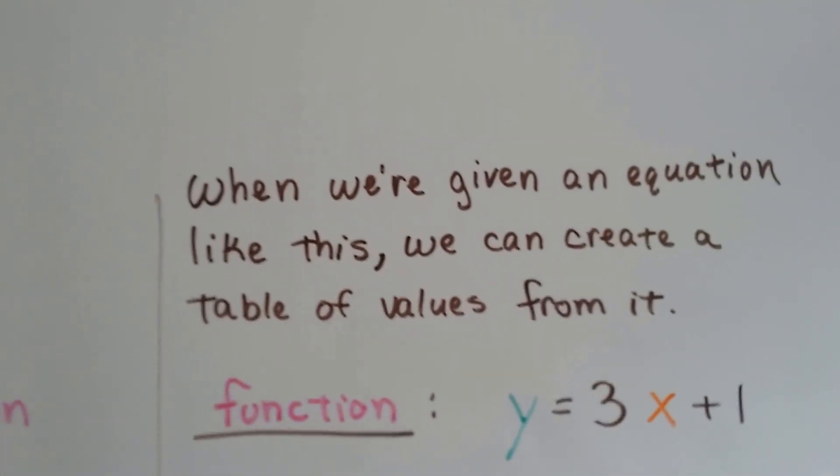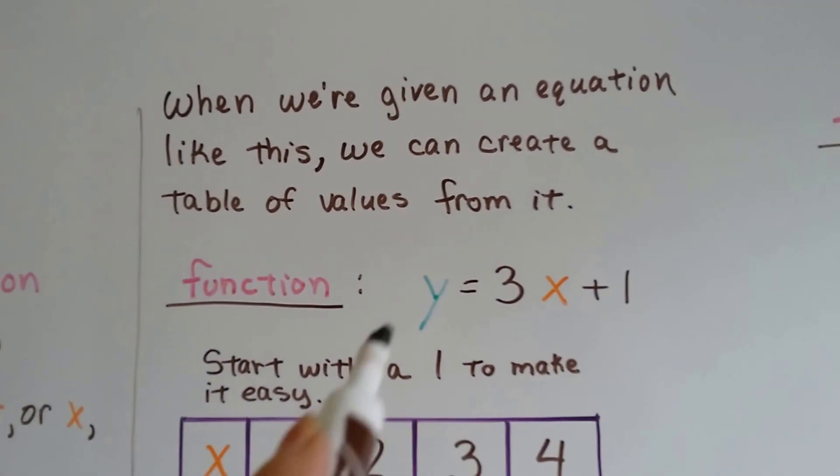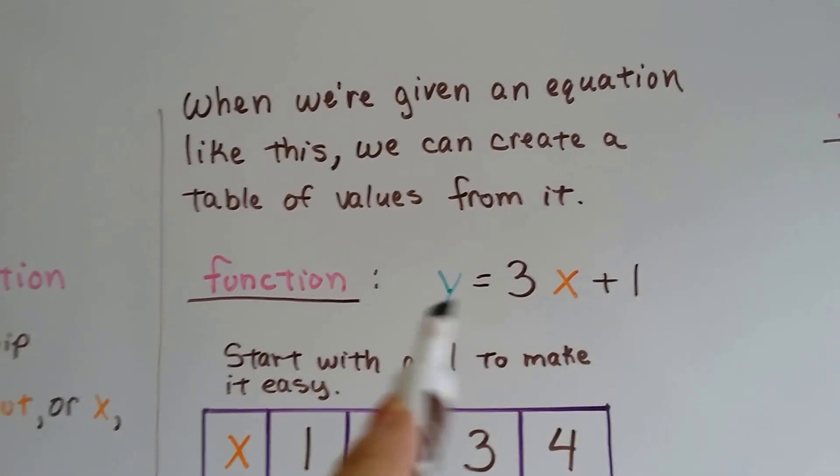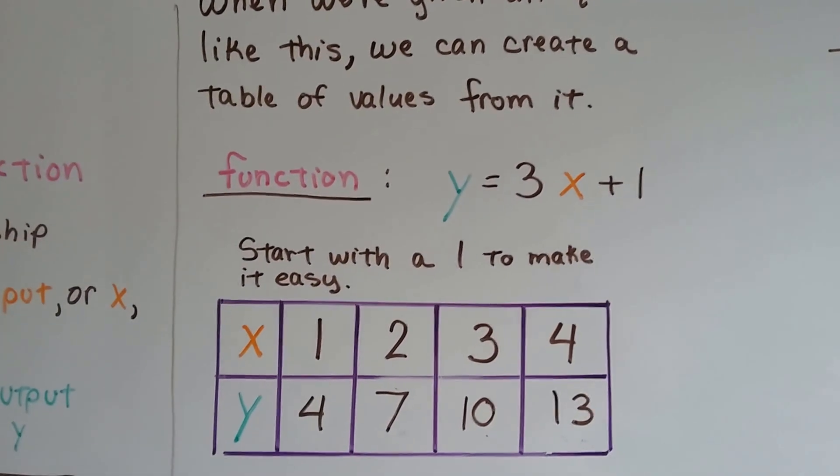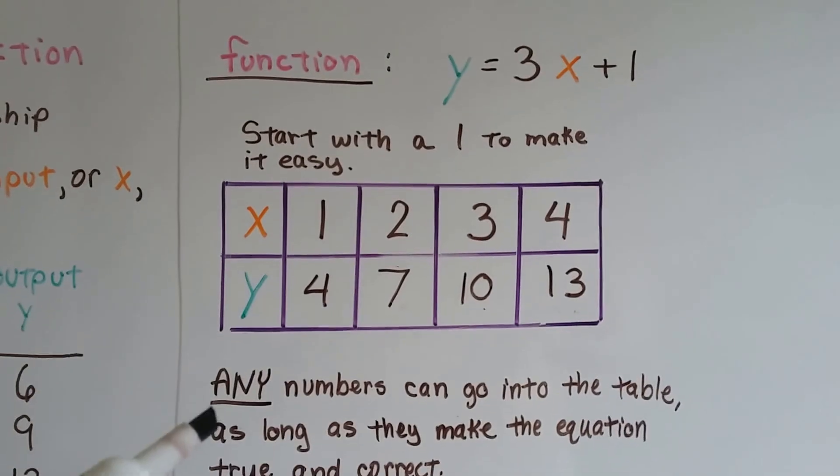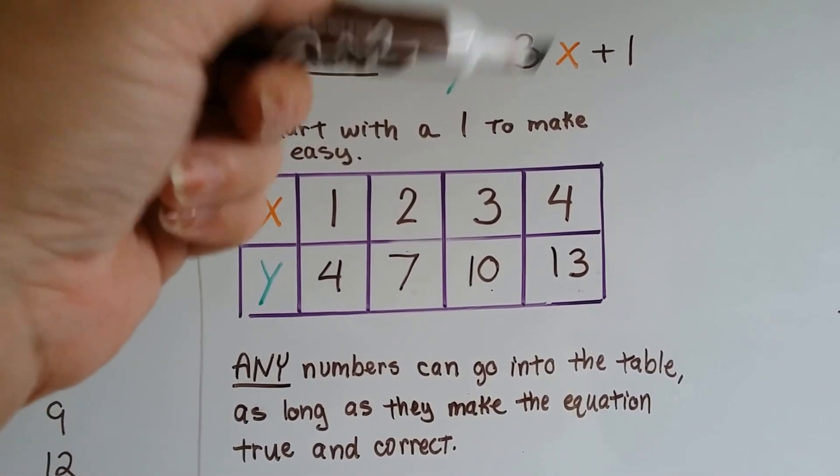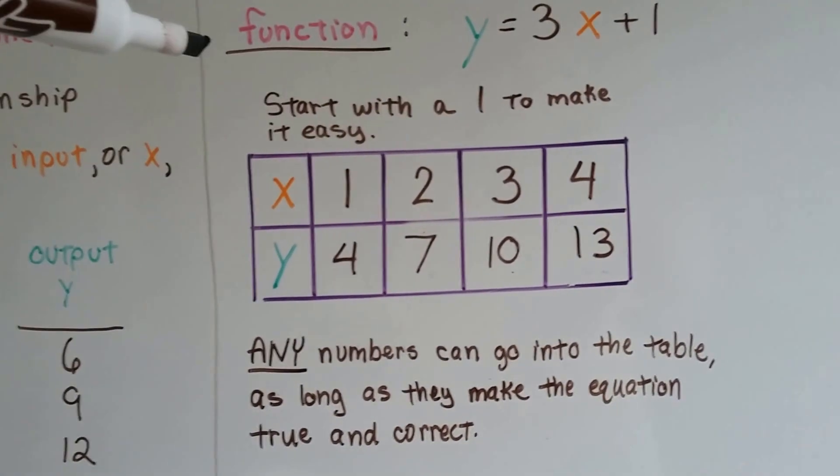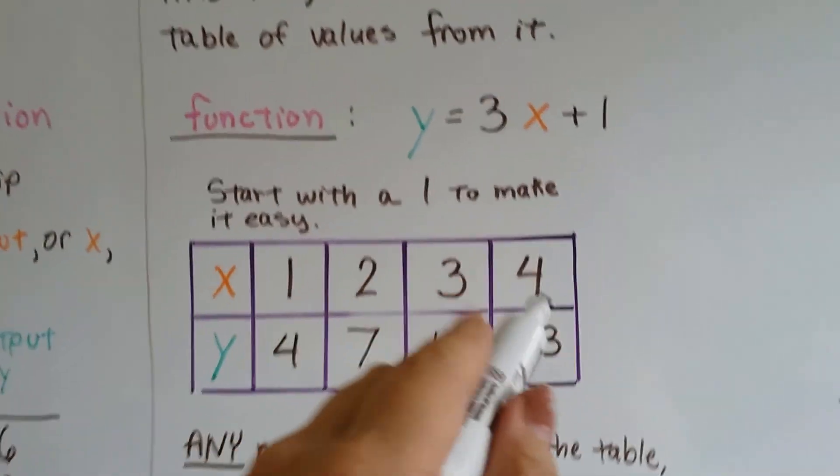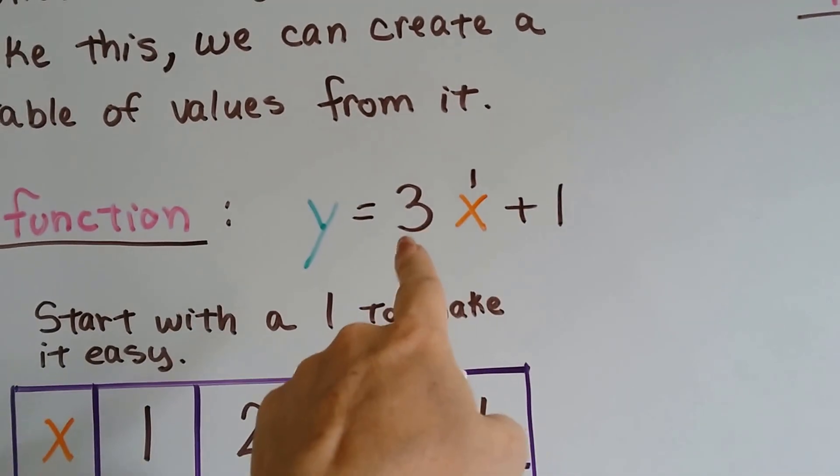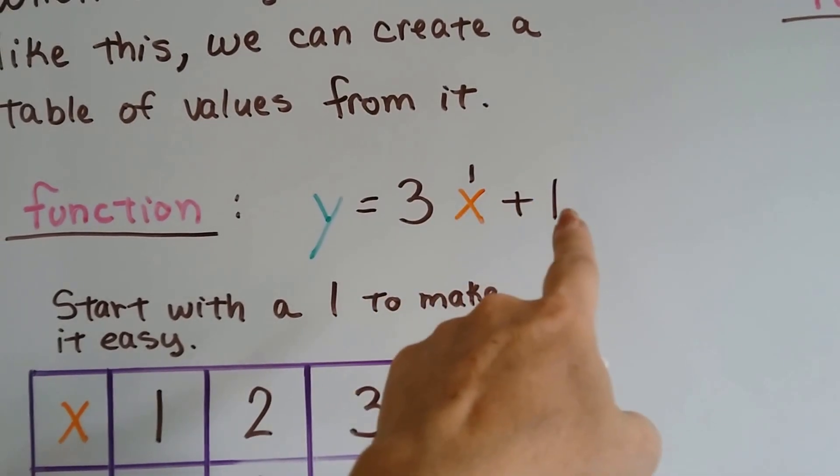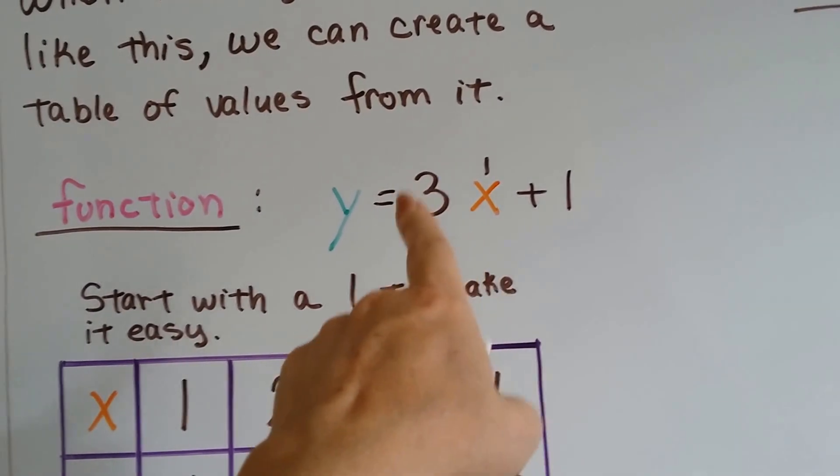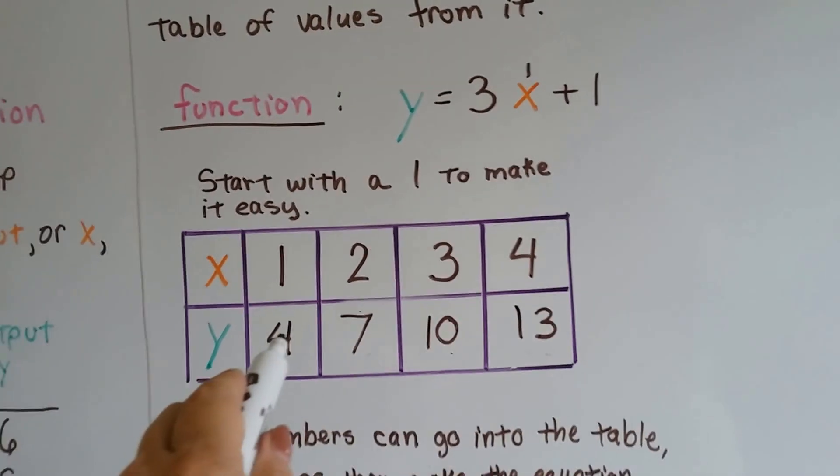So when we're given an equation like this, we can create a table of values from it. If we're given y equals 3x plus 1, we can make a table of values from this equation. We can start with 1 to make it easy. Any numbers can go into this table as long as it makes this equation true. I could use 10,000, 20,000 if I wanted to. I'm going to start with 1 and make it easy on myself. So if x equals 1, 3 times 1 is 3, plus 1 is 4. When they're next to each other, that means multiplying. So 3 times 1 is 3, plus 1 is 4, so y will equal 4.